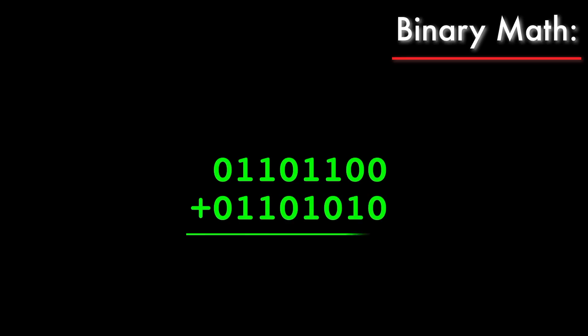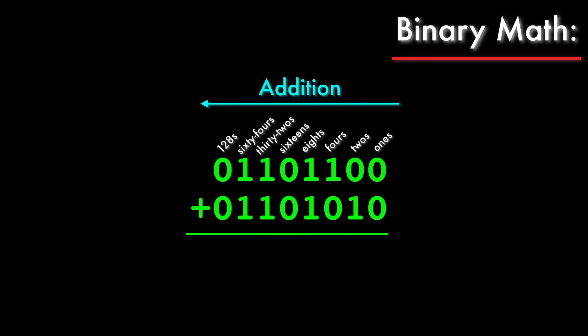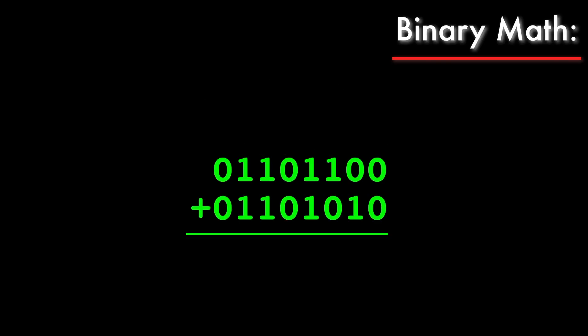Binary arithmetic works just like the decimal arithmetic we're used to, except we only use the digits 1 and 0. Each column represents larger and larger quantities, and to add numbers together we proceed from right to left, smallest to largest. 0 plus 0 is 0. 0 plus 1 is 1. 1 plus 0 is also 1. 1 plus 1 is 2, but there is no 2 in binary — we have to write 1 0. So we carry the 1 to the next column and write 0 in the sum.